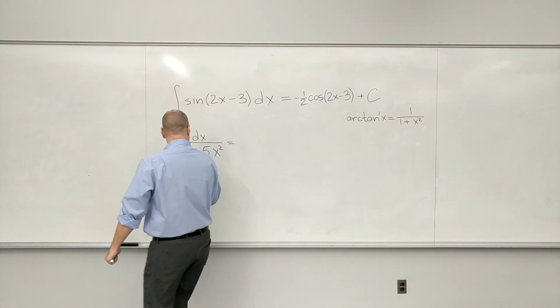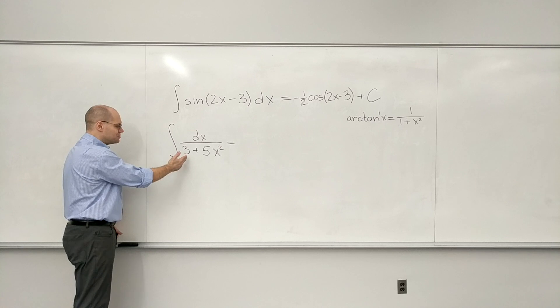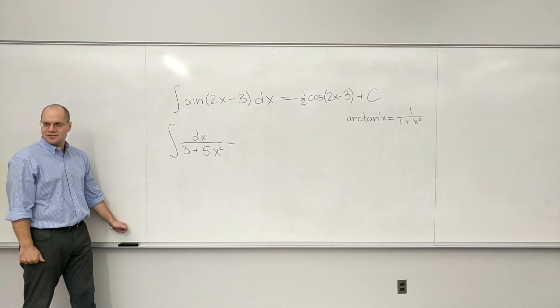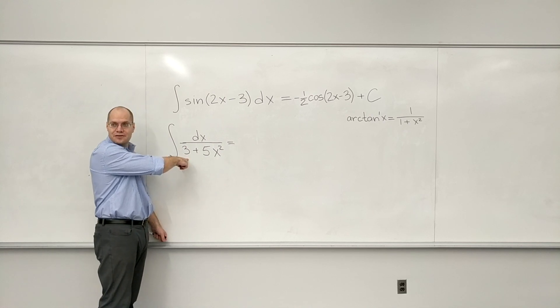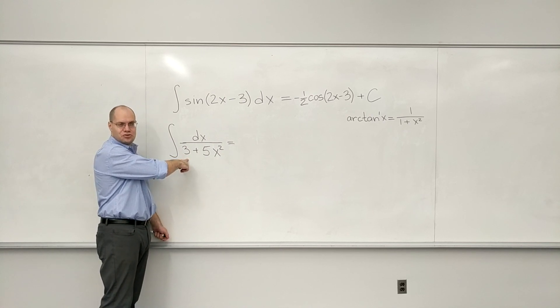So this has to be converted to 1 plus for you to have any chance. And you can do it by factoring out the 3. You need 1 plus, so you get 1 plus.